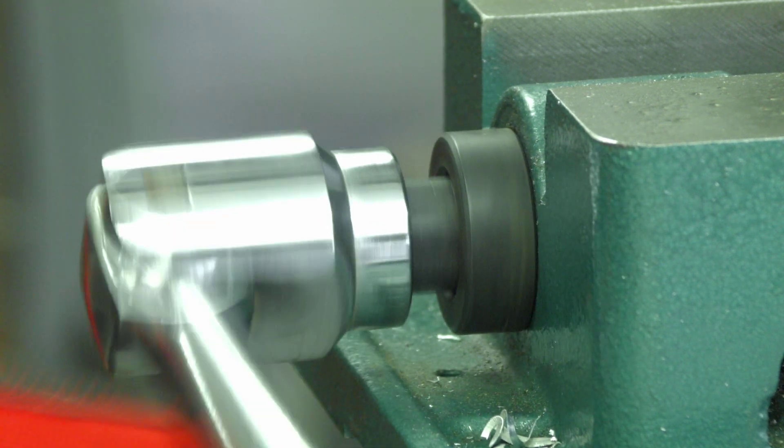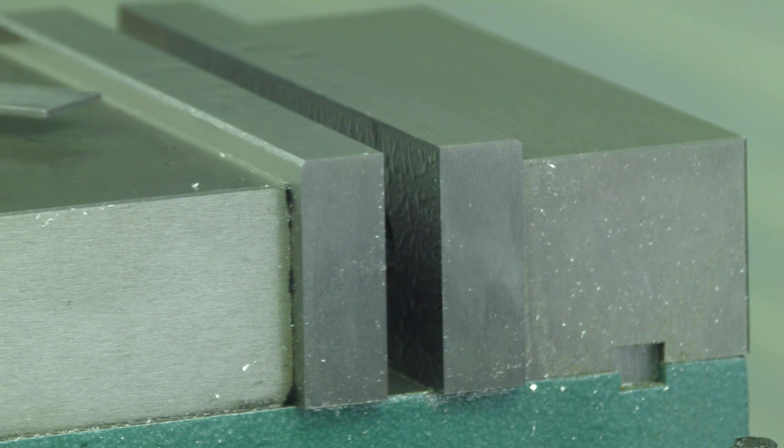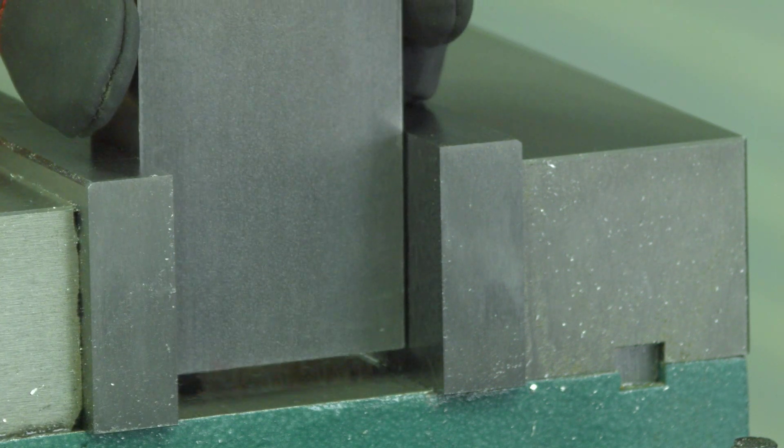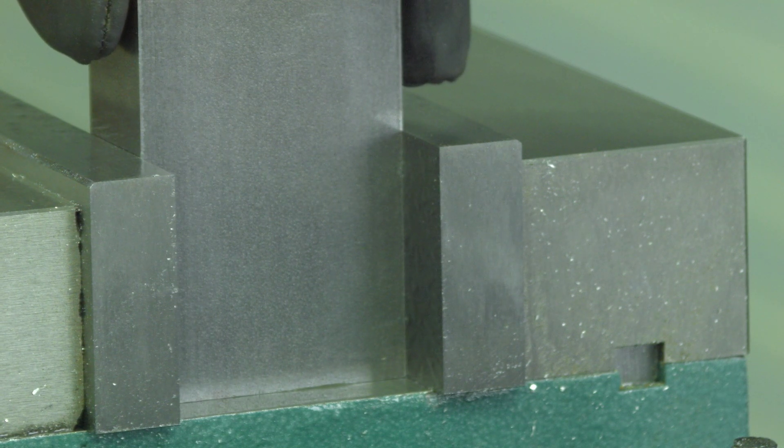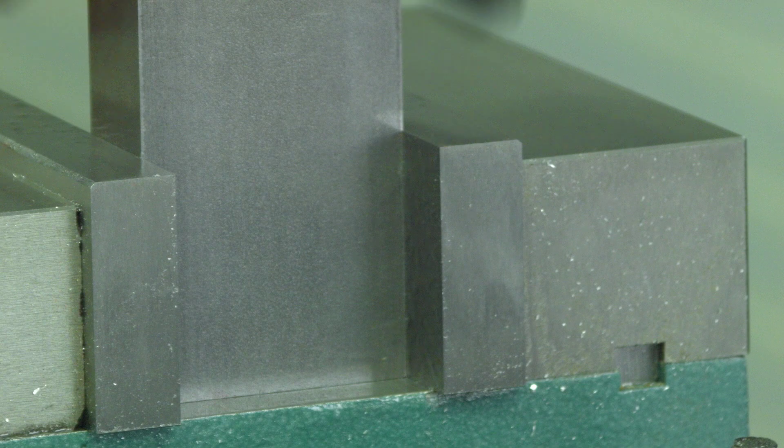Open your vise up and load your block in between the jaws. You can load the part the way I have it but it's not the only choice you have for loading the block. I keep lots of oil on the vise to prevent rusting and I recommend you do the same.